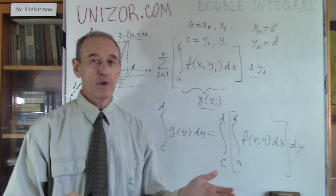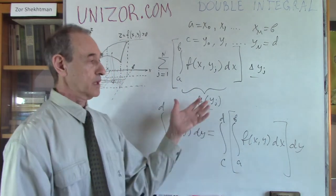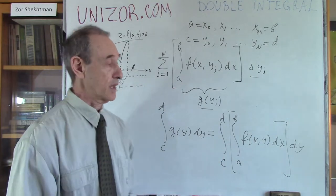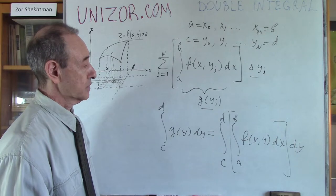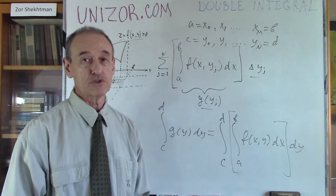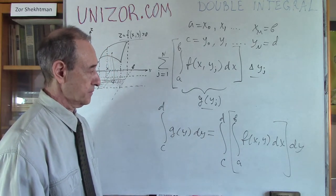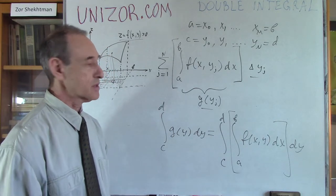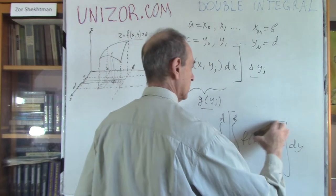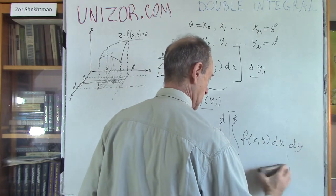I didn't really do much beyond what we discussed when we introduced the definite integral for a function of one variable. This is the equivalent for a function of two arguments f(x, y). Here is a very interesting consideration: think about the logic of how I came up with this.